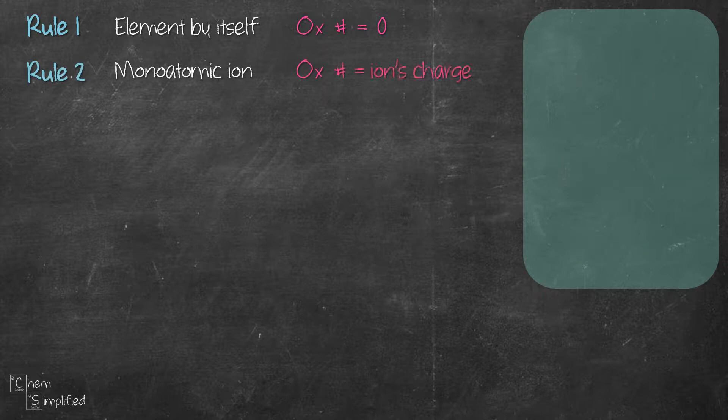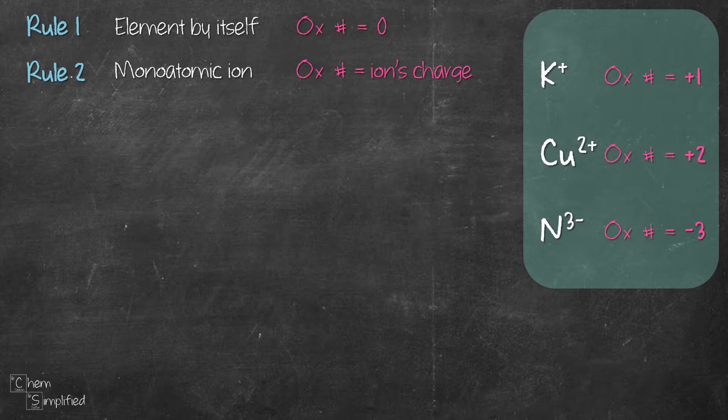Rule number two states that the oxidation number for monoatomic ion is the ion's charge. What do I mean by that? For example, in K+, the charge is plus one. That means K's oxidation number is plus one. Same goes to Cu2+. The oxidation number for Cu is plus two. And N3 minus, the oxidation number for nitrogen is minus three.